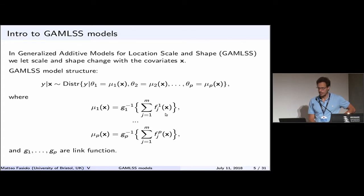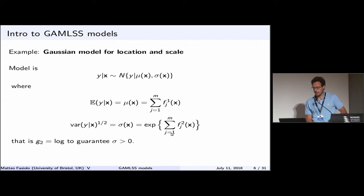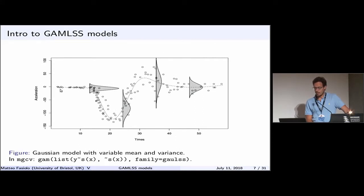The simplest example is a Gaussian GAMLSS where we have an additive model not only for the mean mu but also for the standard deviation sigma. For the standard deviation we use the log link function to ensure it cannot go below zero. Applied to the motorcycle dataset, the dashed line shows the conditional mean of acceleration changing with time, while now the variance of the response is allowed to change smoothly with time rather than remaining constant.